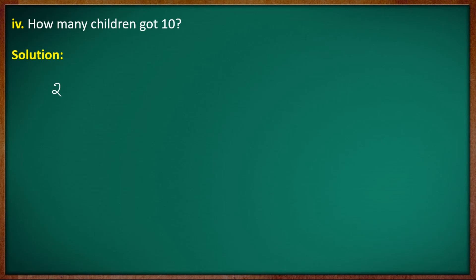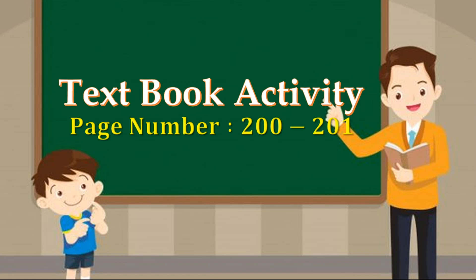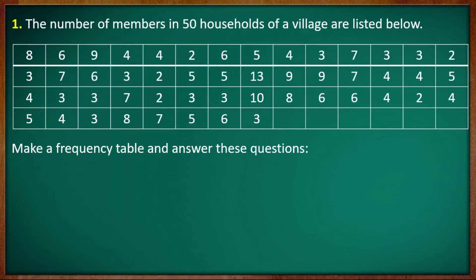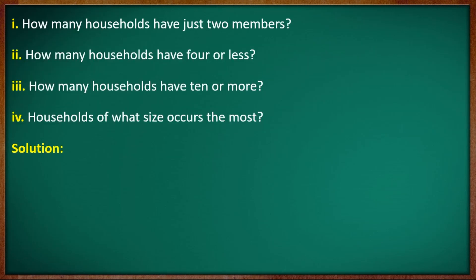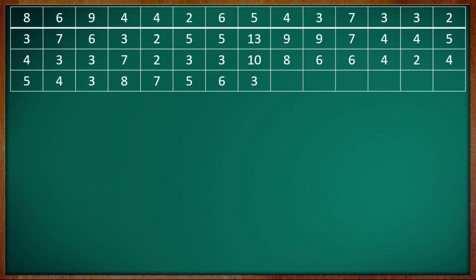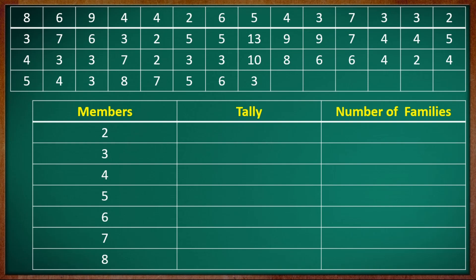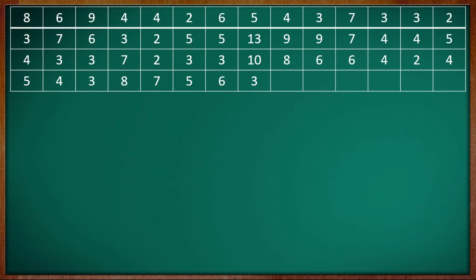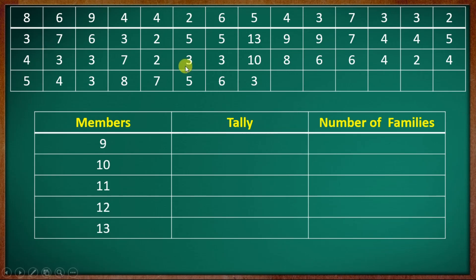Now for the desk work activities on page 201-202. The number of members in households in the village are listed. Make a frequency table and answer these questions: how many households have just two members? How many households have four or less? How many households have ten or more? Which household size occurs the most? We set up a table with columns: members, tally, number of families. The maximum count is 13.